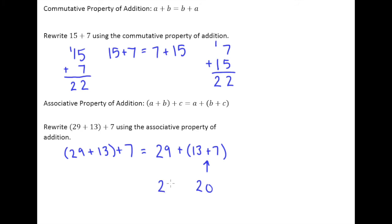And then, of course, we have the 29 from above. And then 29 plus 20, you might even be able to do that in your head too. 49. So sometimes using the associative property makes calculation easier.